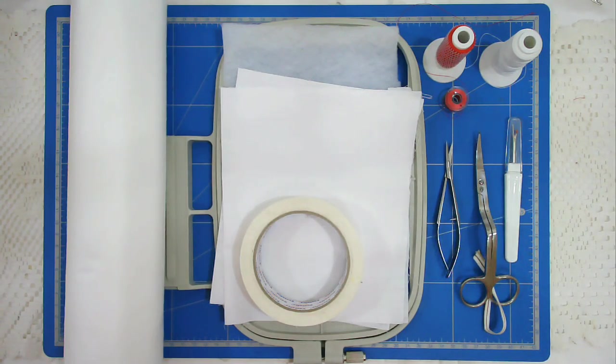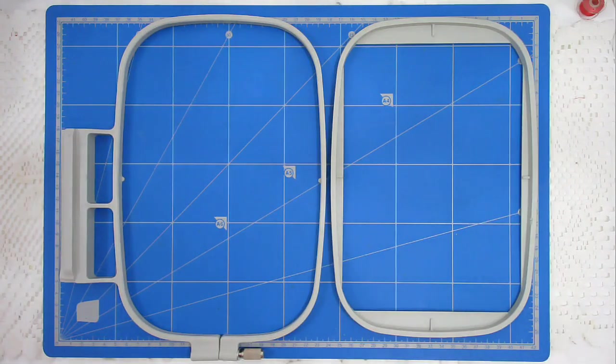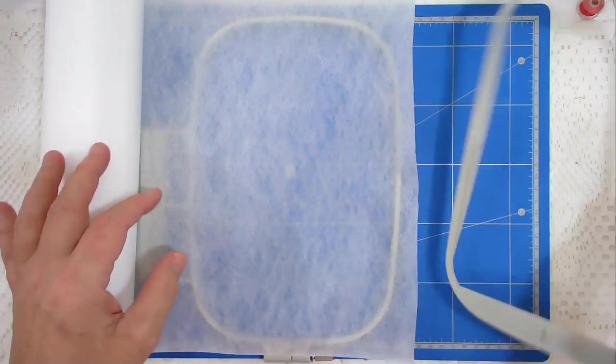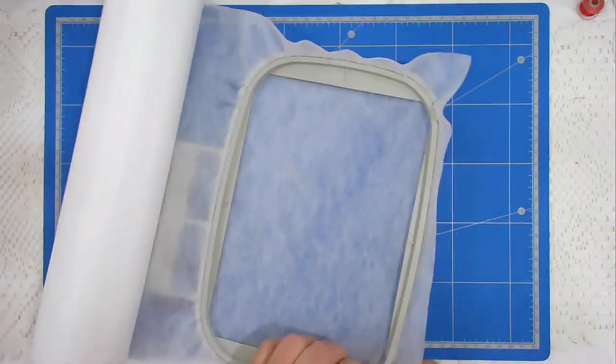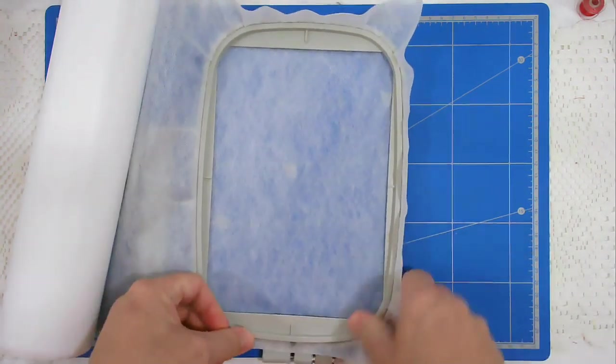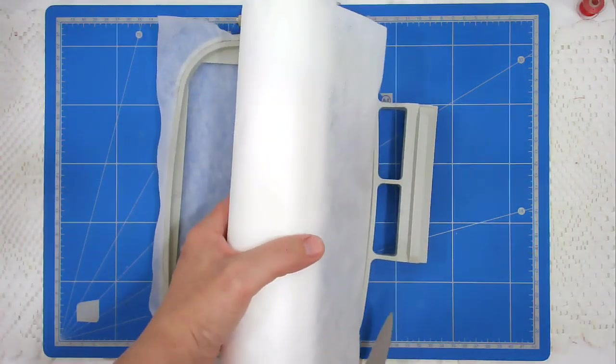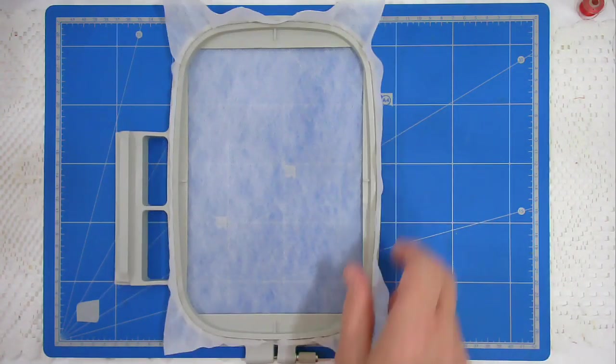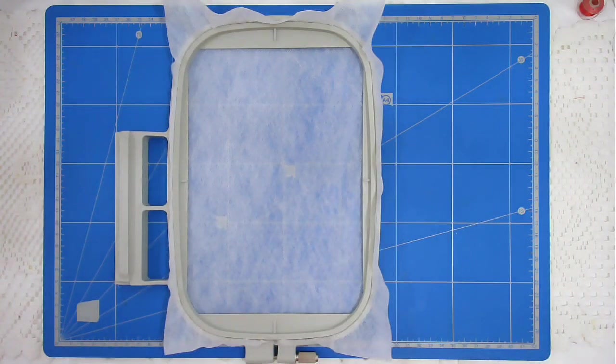I'm going to start off by hooping my stabilizer and I'm going to put that in my machine and stitch round number 1, which is the outline which gives me my batting placement.